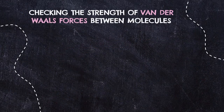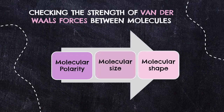To conclude, when determining the strength of van der Waals forces, you should start from molecular polarity — knowing whether they are polar or non-polar. Then look at their sizes if they have different molecular mass. If they have exactly the same size, proceed to shape and look at whether branches of atoms are present or not.